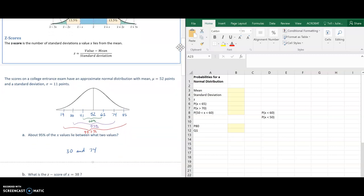Another question you might see is what is the z-score for a particular value? So if x equals 38, I'm using this formula, the value which is 38 minus 52 divided by 11.